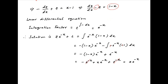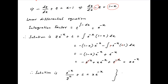Now, replacing z with 1 upon y², the solution is e^(−x) upon y² plus the constant of integration is equal to x times e^(−x), which is the required solution.